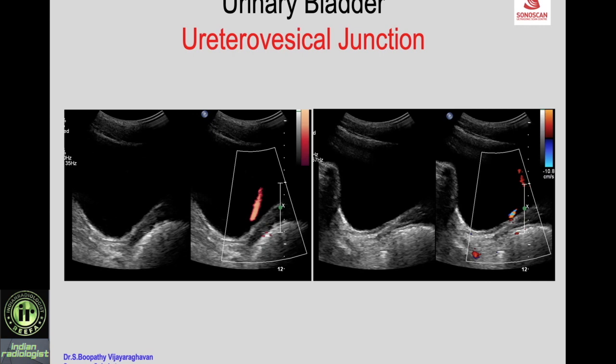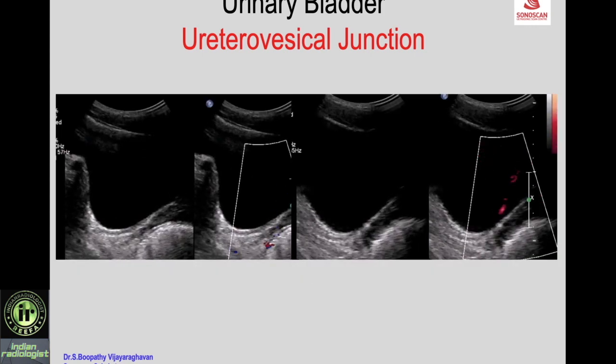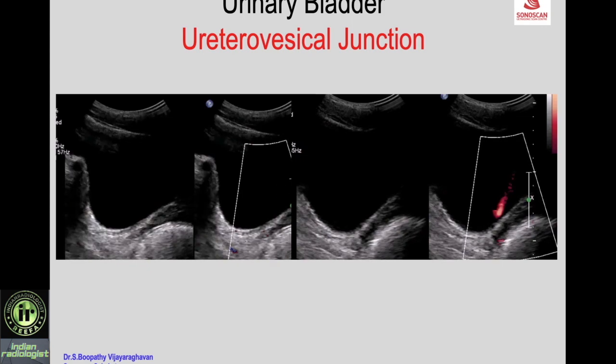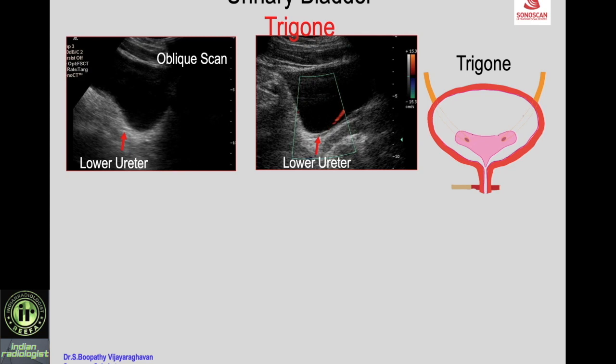With color power angio and color Doppler you can see the collapse of the distal-most ureter with the ureteric jet, which is normal. Visualizing the ureteric jet is useful in certain situations, which will be dealt with in the pathology lectures.